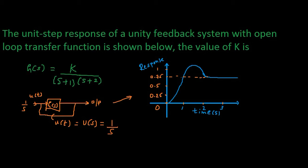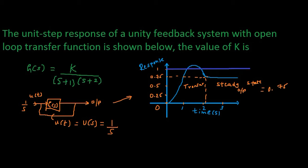The output is here and we need to find the value of k. As you can see, the output is reaching the value of 0.75 in its steady state. So this is the transient phase, and this is the steady state output. The steady state output is 0.75, and our input is a constant value of 1 because this is a unit step input.